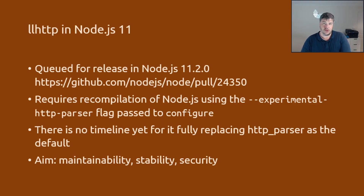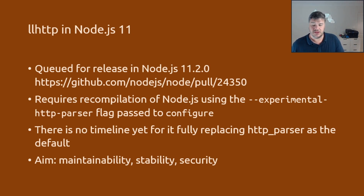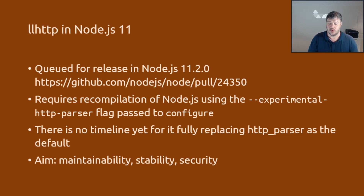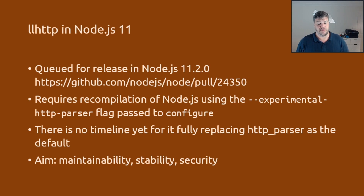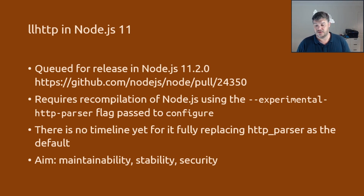There's no firm timeline for replacing HTTP parser yet. This needs to go through some proving time for people to experiment with it and make sure it doesn't introduce more problems than it solves. The aim is to get something into Node that is much more maintainable, stable, and secure. The process by which Fedor built this is quite impressive and should lend itself to all three. The node test suite is by no means comprehensive, so we need to get this into people's hands on real code before shipping it as default. But this is the end of an era for HTTP parser, and llhttp will likely be the de facto Node parser in the near future.